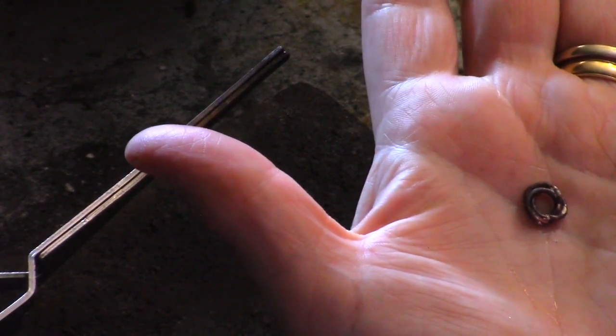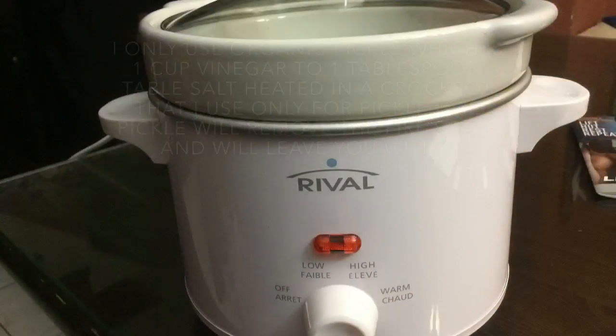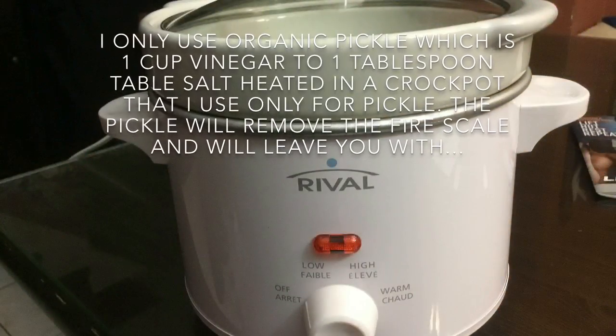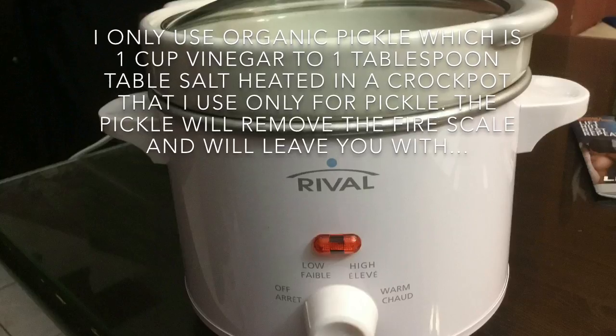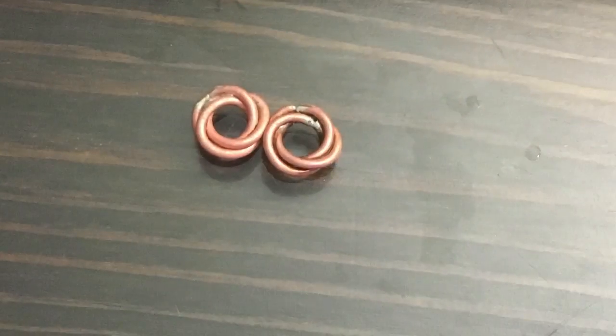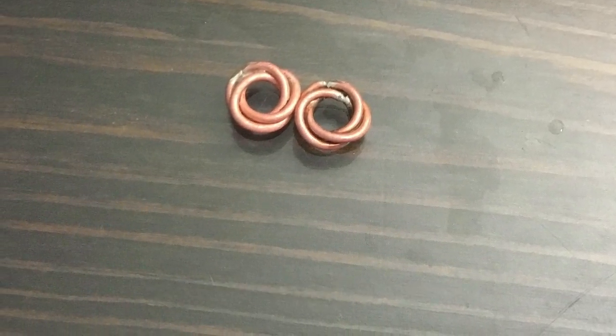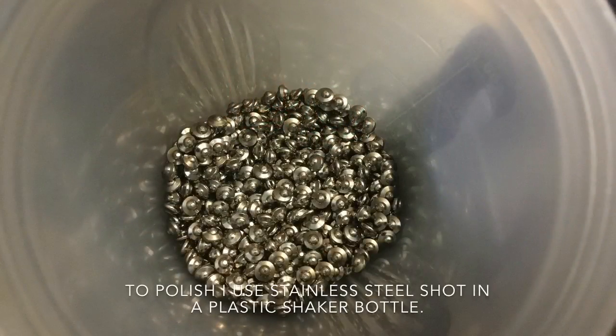The last thing you want to do is you want to pickle it. I use organic pickle which is one cup of vinegar to one tablespoon of salt and you just keep it heated. It'll take all that fire scale off, and then you'll be left with just a kind of a dull finish.